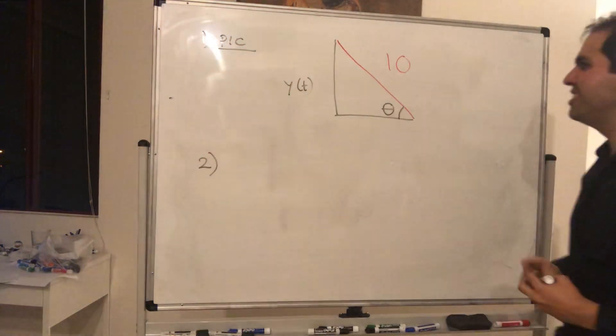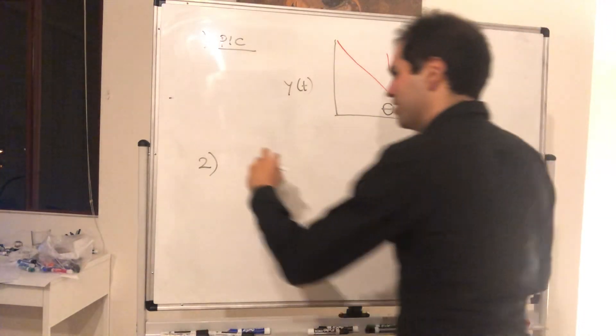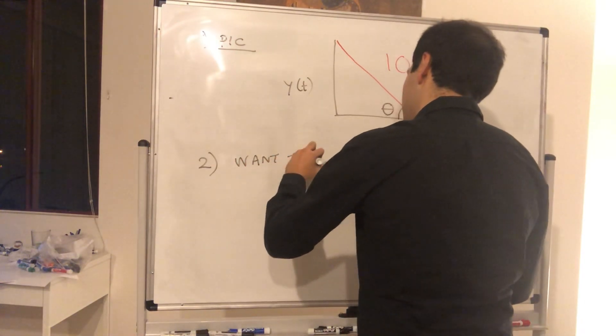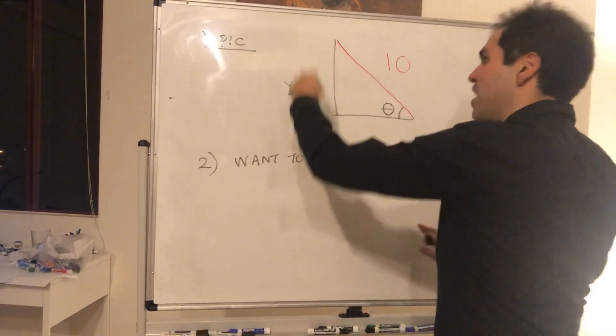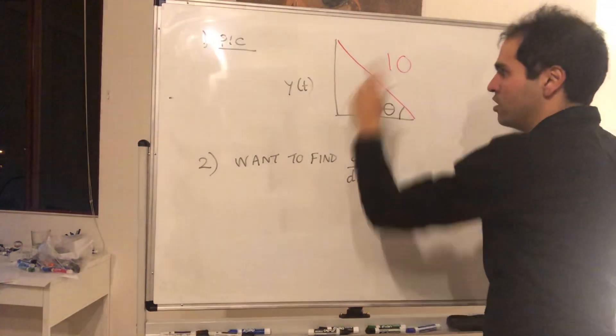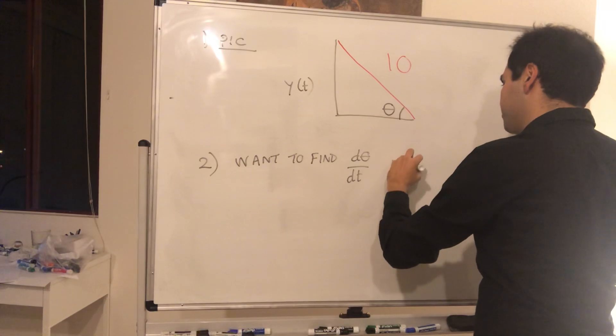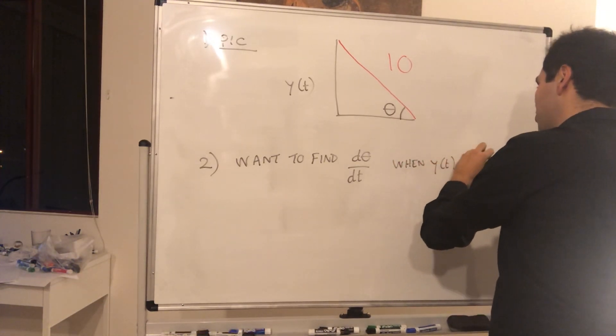And now what do we do? Well we need an identity. Well first of all what do we want to find? We want d theta over dt when the ladder, the height of the ladder is six feet away, the top of the ladder is six feet away from the ground. So when y of t equals six.